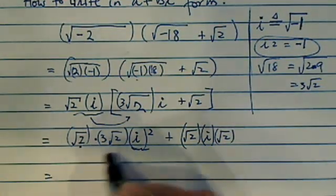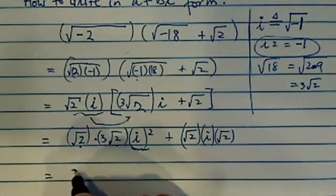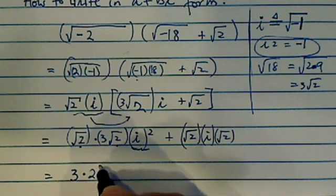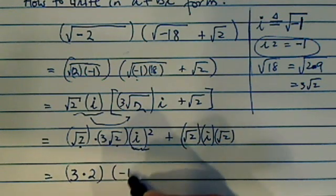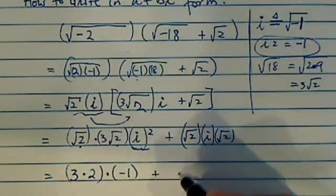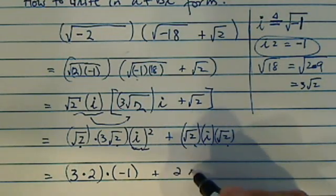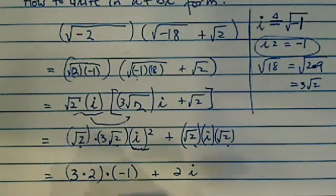So I have radical 2 times radical 2, that's 2. So 3 times 2, and then minus 1, times minus 1, plus same deal here, this is 2i. So 6 minus 6 plus 2i.